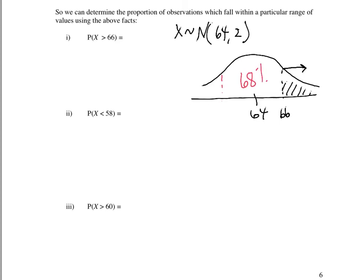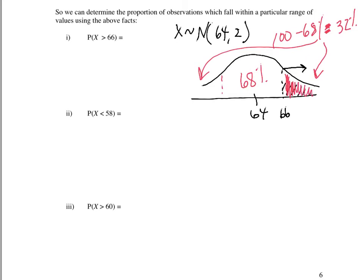So if there's 68% of the observations in between, then how much is there outside? How much is there here or here? Well, it would be 100 minus 68%, which would be 32% of the observations. So 32% of the observations are out on both sides. All I want is one side — so how much is here? It has to be half of 32.